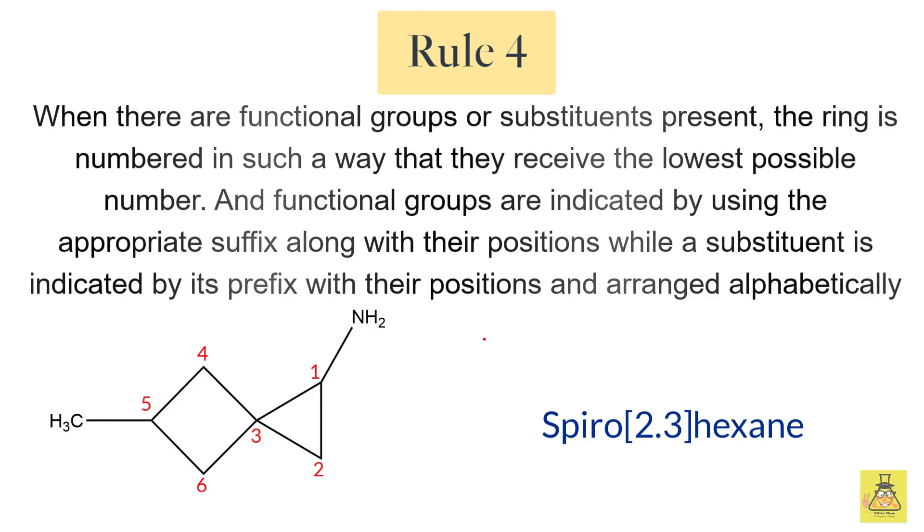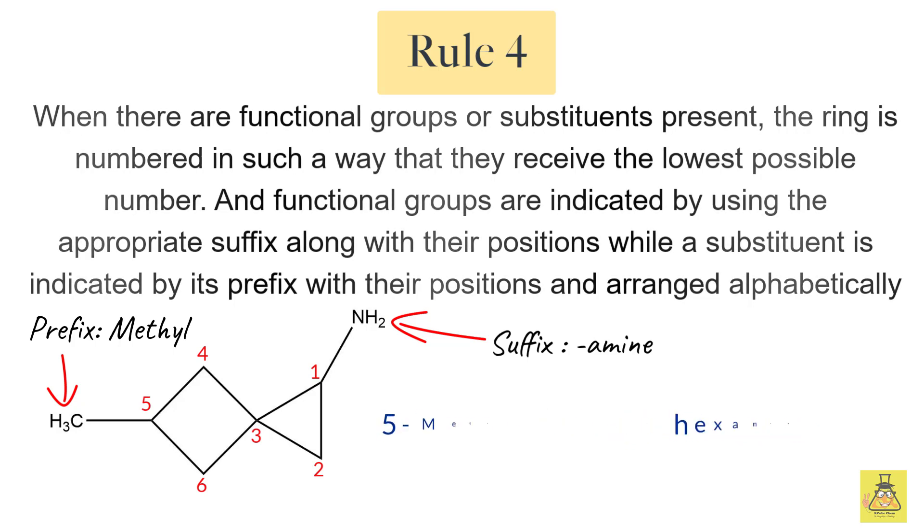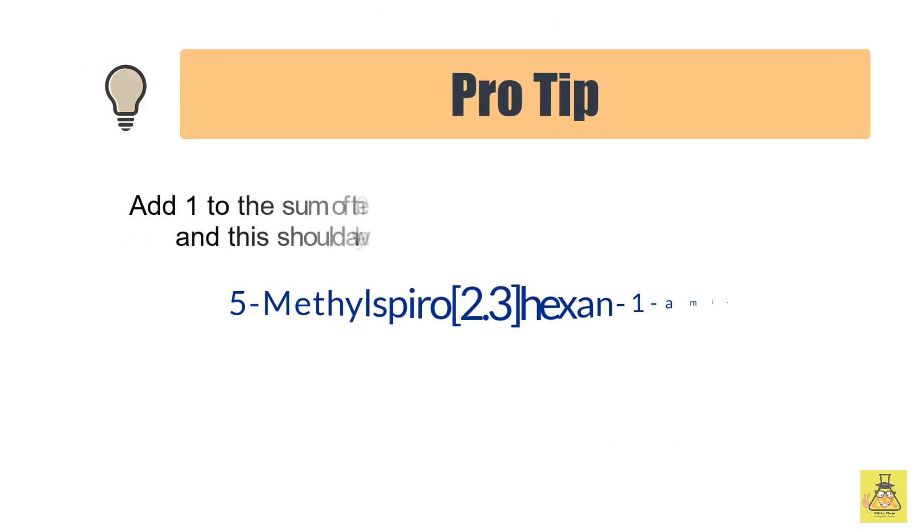We have already done that, and we see that both our functional group amine and the substituent methyl have got the lowest possible number. Now as amine is our functional group, we will use a suffix for it which is amine, and the methyl group will be indicated by the prefix which is methyl. Adding all that to the name, the final name comes out as 5-methylspiro[2.3]hexan-1-amine.